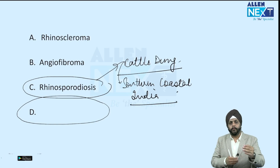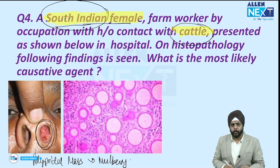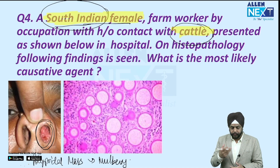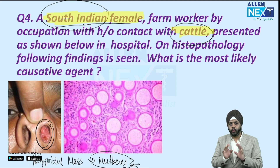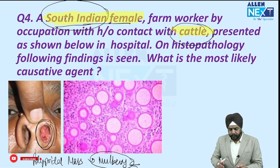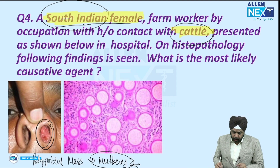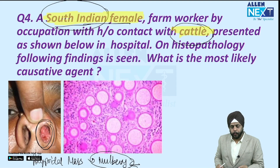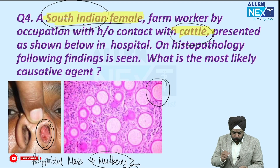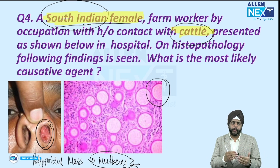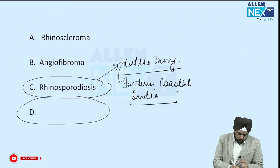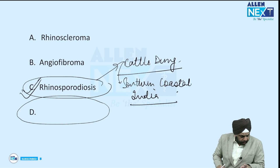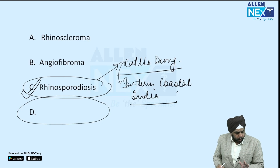Sometimes the examiner gives something tricky. You can see in the nose there is a polypoidal mass — we describe it like a strawberry-like mass, not a mulberry. Many students were saying mulberry today, but the actual word is strawberry-like mass because it sometimes bleeds when touched and has white-yellow spots. The histopathology shows fungal septate spores — a sporidium-like structure — which is why it was initially confused with a fungus. The answer is rhinosporidium.